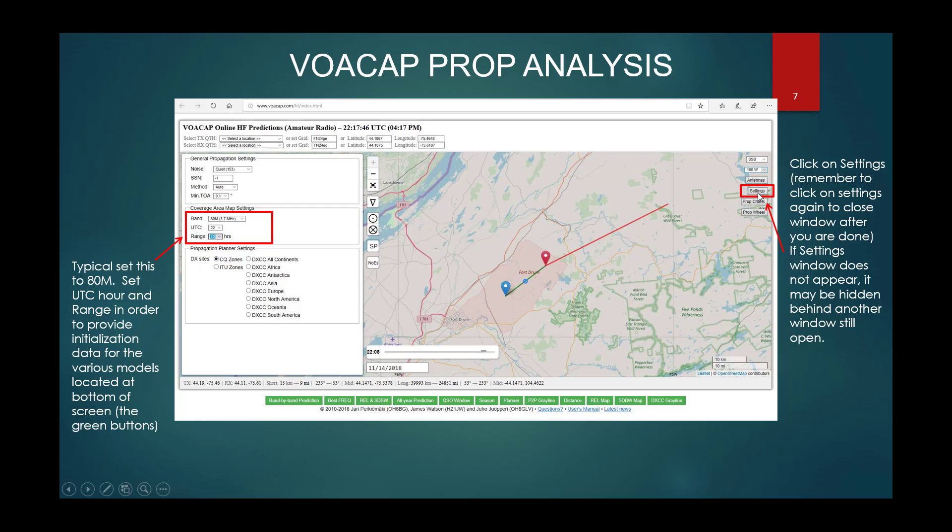Then we will click on settings, and this is where you're going to better model your noise. Are you in a quiet environment or are you in a noisy environment? Basically, are you out in the woods or are you near a lot of power lines? Just select what you think is according to your environment. Do not necessarily worry about setting the sunspot number, SSN. Because the program actually goes back, even though it says negative one there, and actually researches what is the current sunspot number for the day.